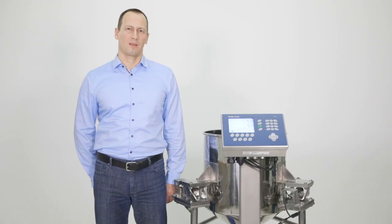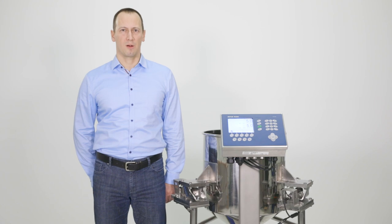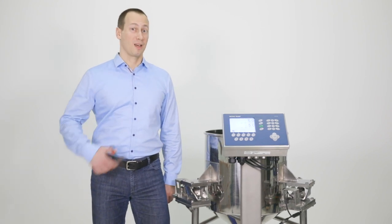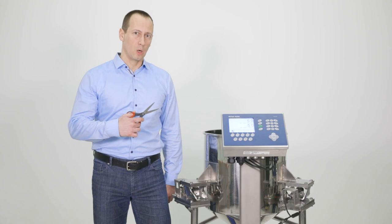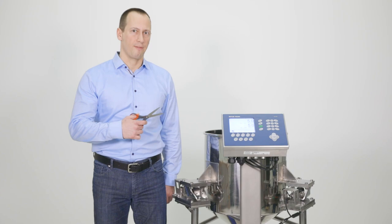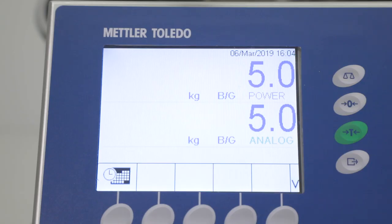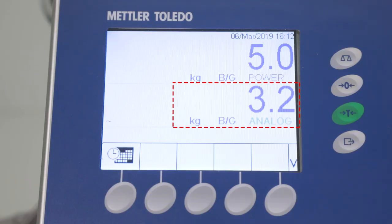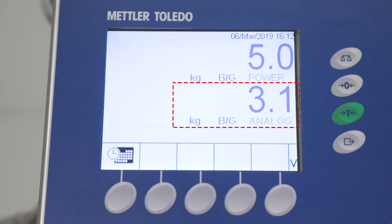Let me now demonstrate what happens when a load cell completely fails. To show that, I will cut the cable of an analog load cell and of a PowerCell load cell and we will see how the system is affected. On the terminals display, you see the analog weight value at the bottom and the PowerCell value on the top. Now I cut the analog cable. You see a significant change in the indicated weight, but you can't tell if this value is true or not. So a broken load cell goes completely undetected.